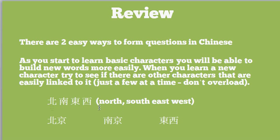Here's a simple example: the characters for north, south, east, and west. You actually already know these — they're the characters for Beijing and Nanjing, two big cities in China. 'Beijing' means 'northern capital' and 'Nanjing' means 'southern capital.' So you learn these characters and link them with others to help you remember them and build vocabulary. One of my favorite words in Chinese is 'dōngxi,' the character for 'thing' — a thing in Chinese is literally 'east west.' I don't know why, but to me it's one of the coolest words in Chinese. That's it for this lesson, and we'll do one more lesson after this.